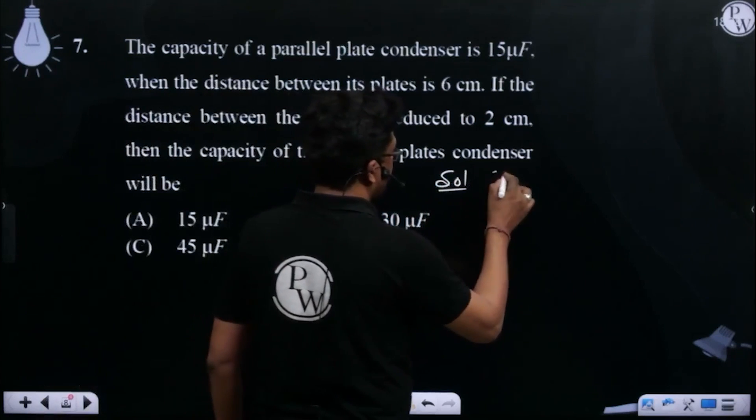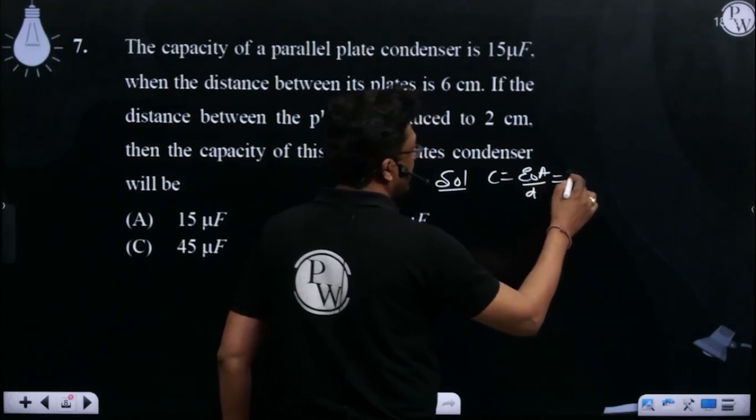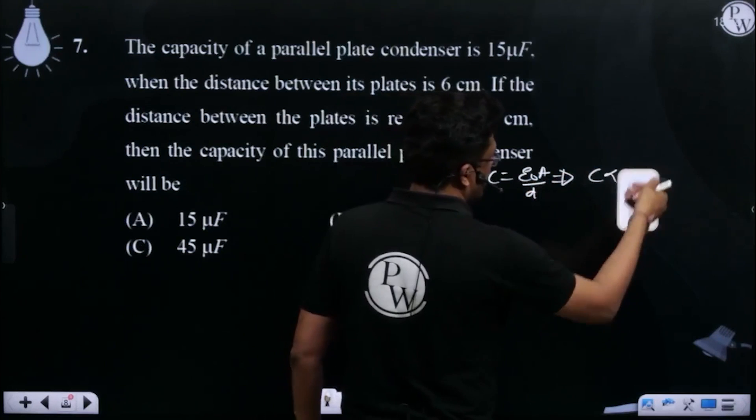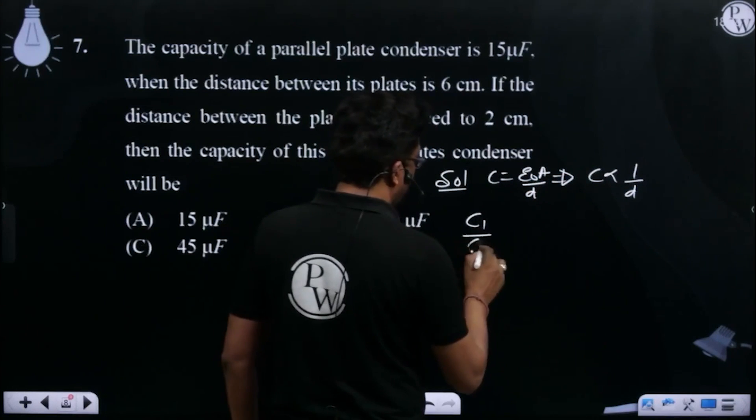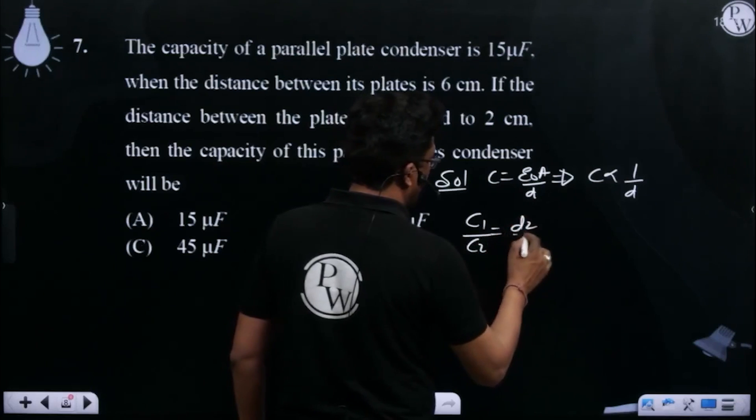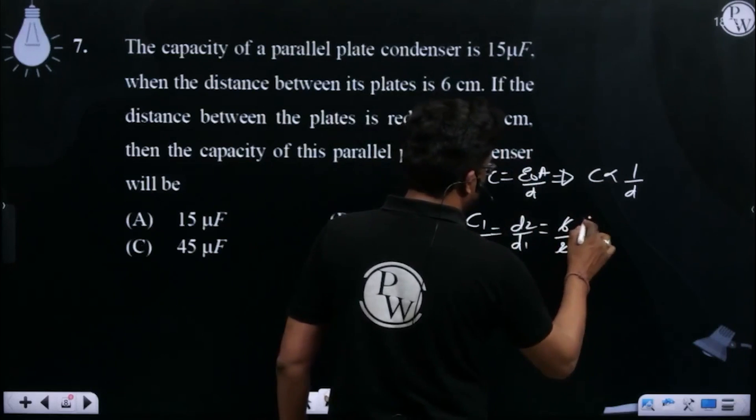The equation is C = ε₀A/D, that is, C is inversely proportional to D. So C₁/C₂ = D₂/D₁, that is 6/2, which equals 3.